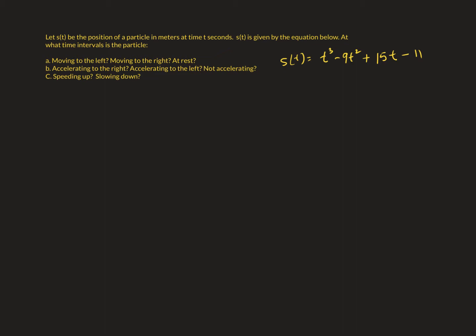I've got a problem here. I've got a position equation that I was given. The position is given in meters at time t seconds. And then I'm asked the following questions: when is the particle moving to the left, moving to the right, at rest, accelerating to the right, accelerating to the left, not accelerating, and then speeding up and slowing down. We're going to address each of these.